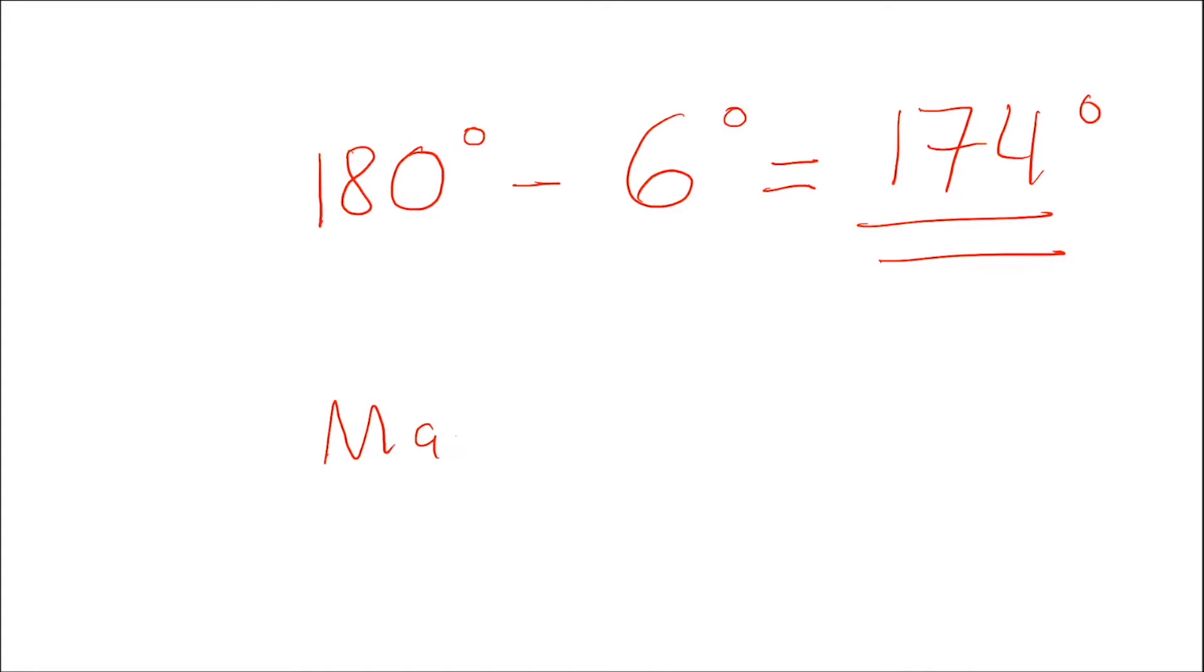Again map to compass. Now if you want to convert it from compass to map you're going to add in an easterly. But I don't want to get you confused just remember east is least. Map to compass you're going to subtract your declination.